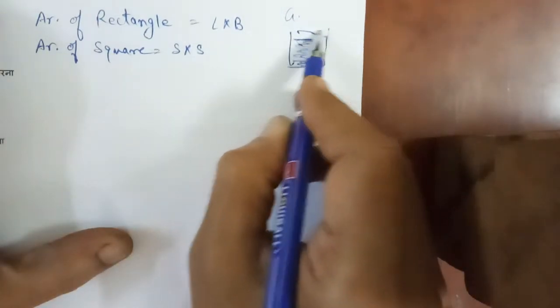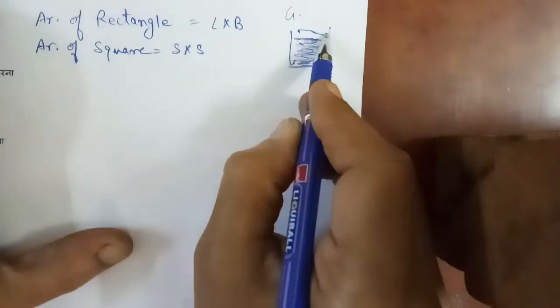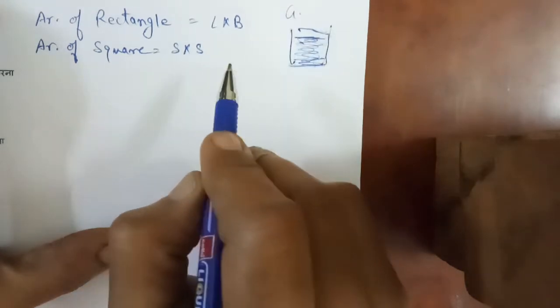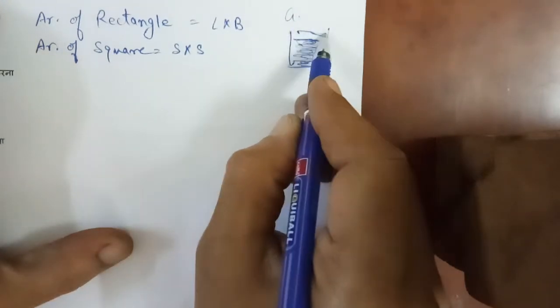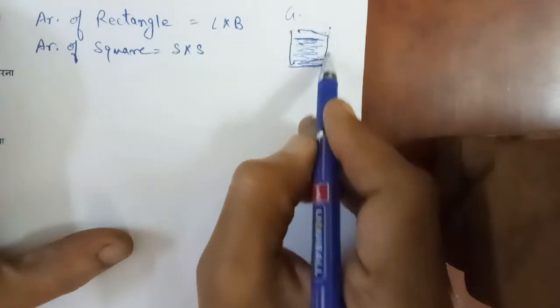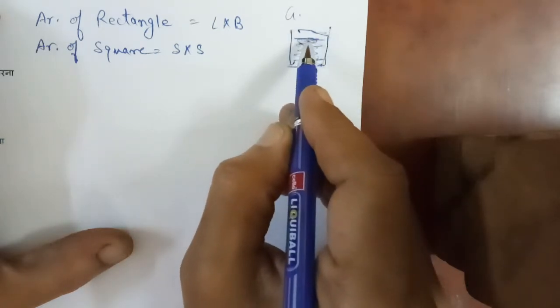And circumference या perimeter क्या होता है? जो boundary होती है, that is called the circumference or perimeter. Circumference is used in the case of a circle, and perimeter is used in the case of any other figure.